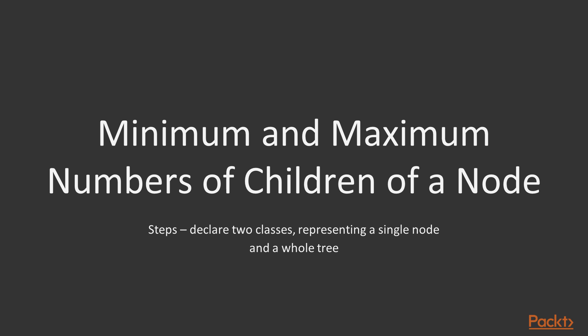Let's briefly talk about the minimum and maximum numbers of children of a node. The C# based implementation of a basic tree seems to be quite obvious and not complicated. To do so, you can declare two classes representing a single node and a whole tree.